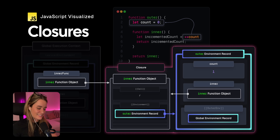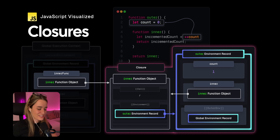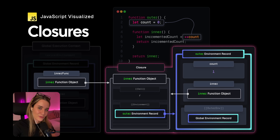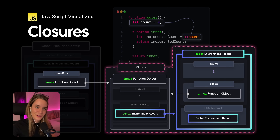I hope this video was at least a little bit useful and that you see that a closure is really just a function object with a reference to a retained environment property, which is then part of the scope whenever we invoke this closure. As always, if you still have any questions, feel free to reach out. Thank you so much for watching. Please don't create a closure over large amounts of data, and have fun coding.